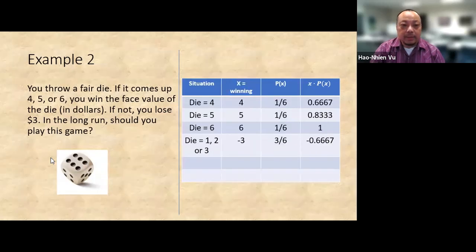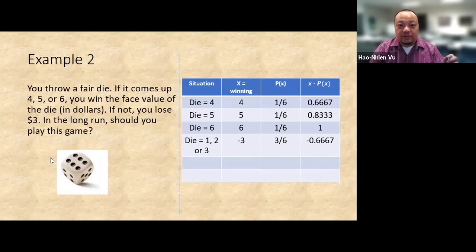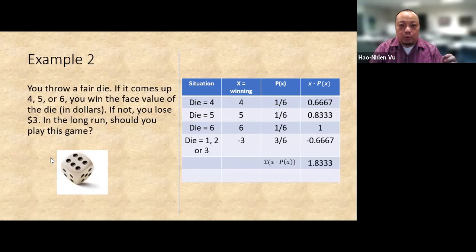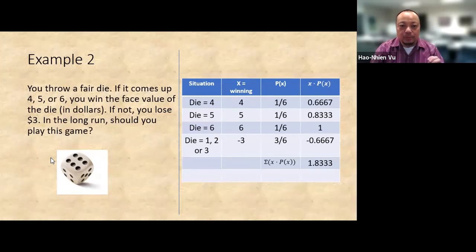Welcome back from the pause. You should have the table like this. And then you add the x times p of x column and you should get 1.833. The expected winning is $1.83. Since it's a positive number, the answer is yes, you should play this game.